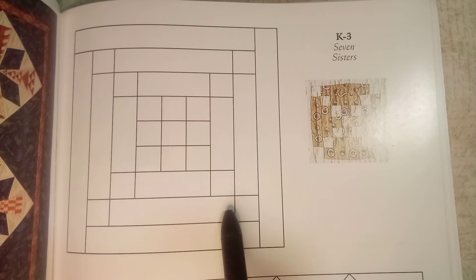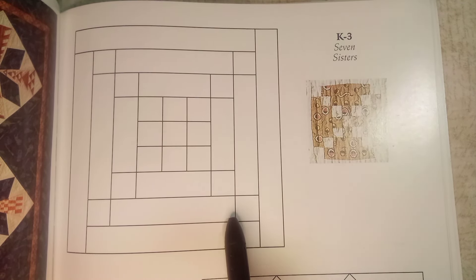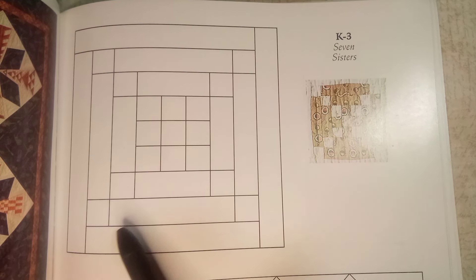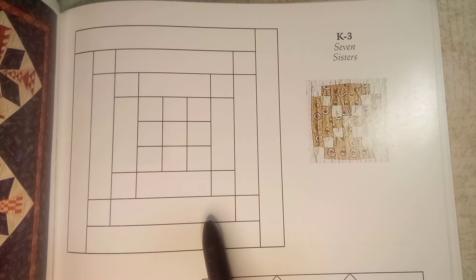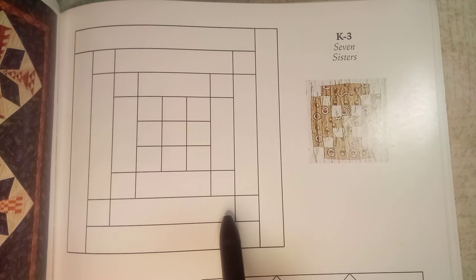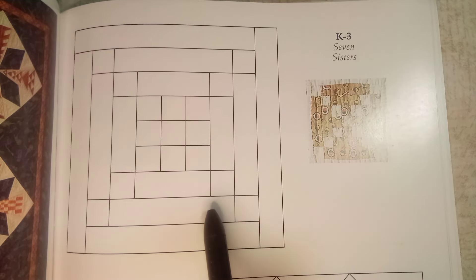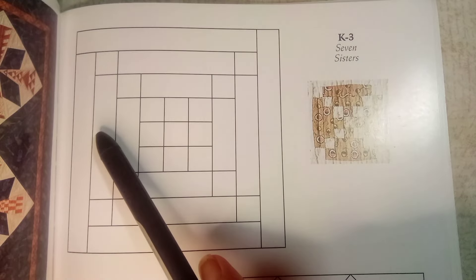Then we go to the next outer section for these rectangles, and these measure two and a half inches. So we'll be cutting these rectangles three inches by one inch. Once again, we have four of them out of the foundation fabric.